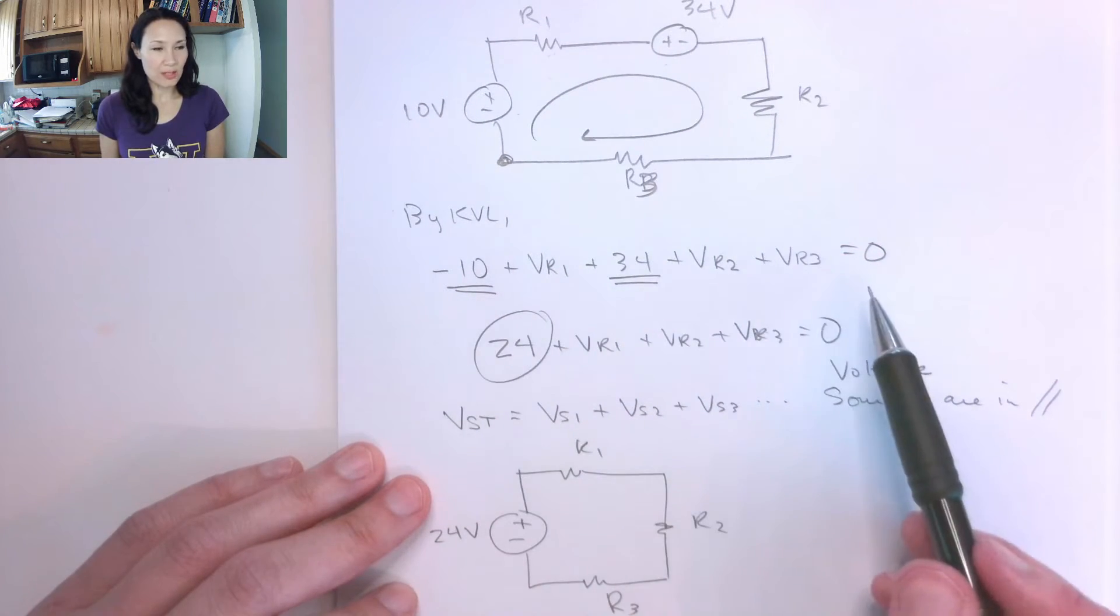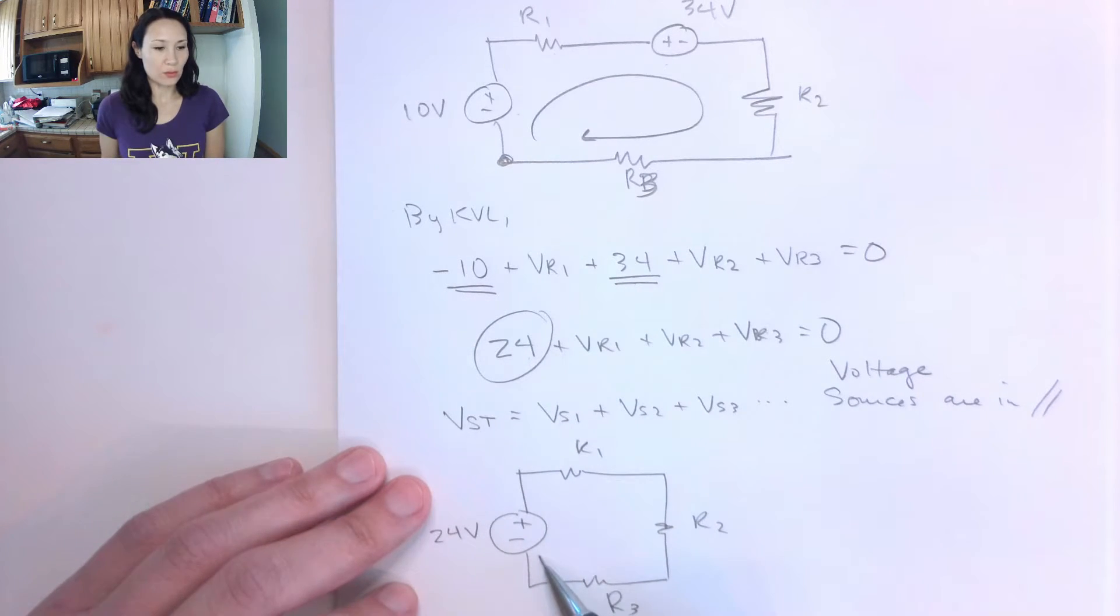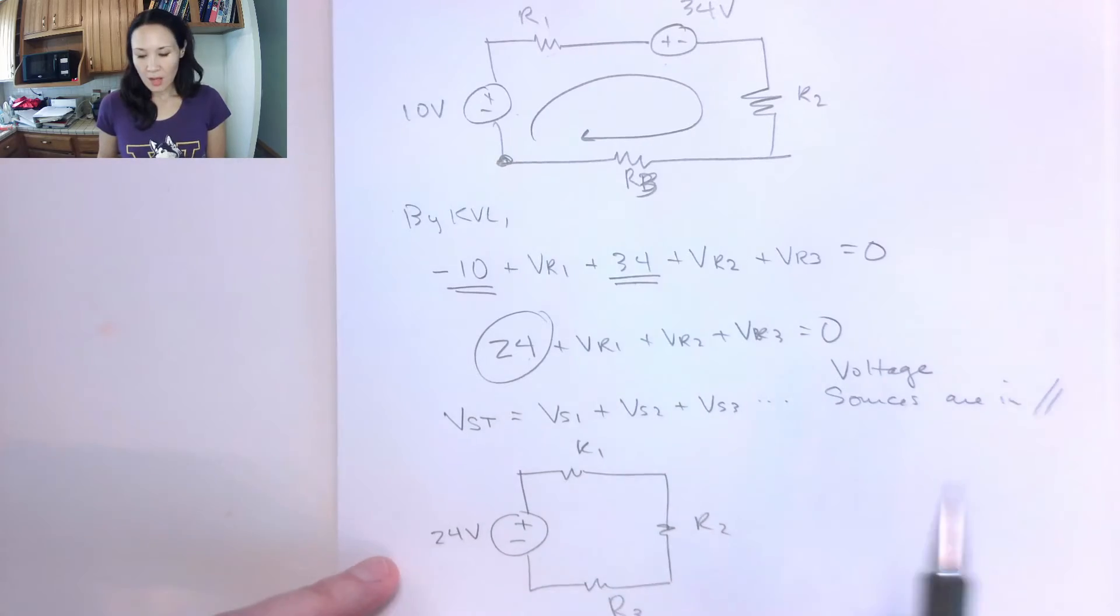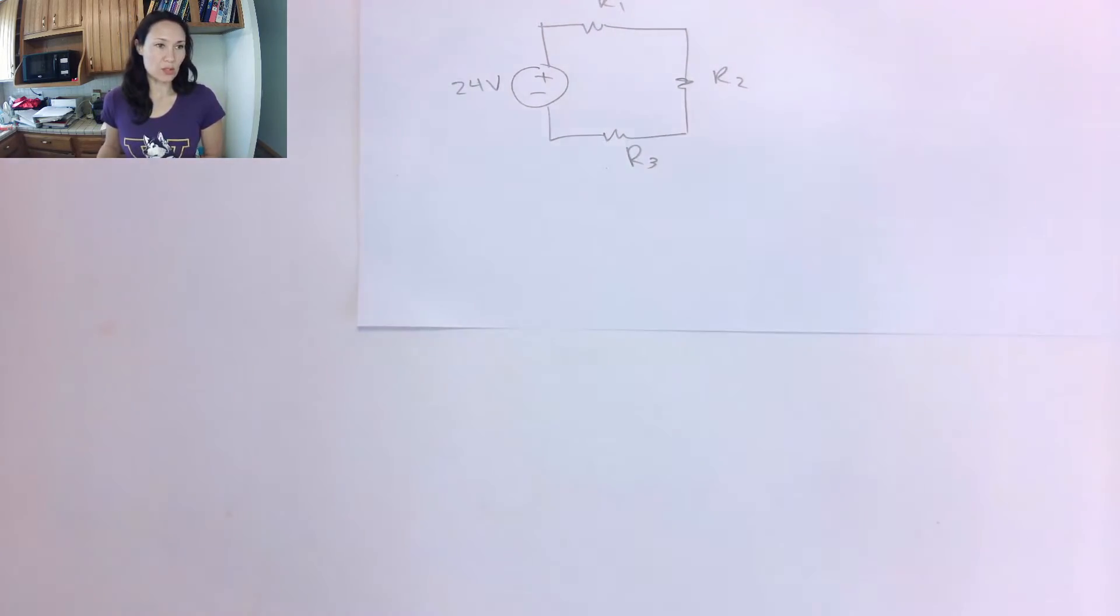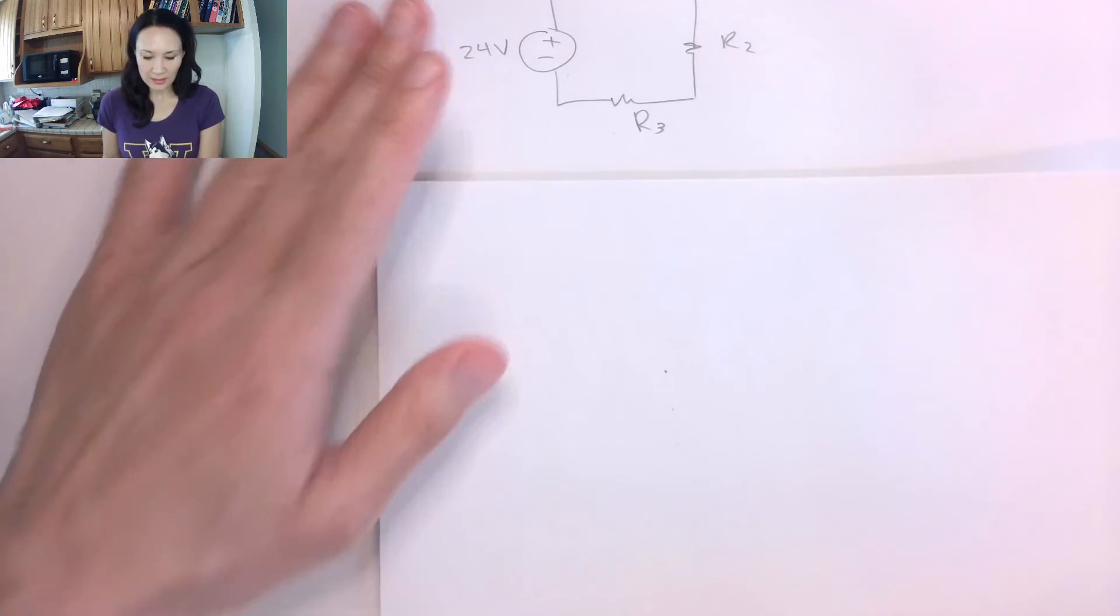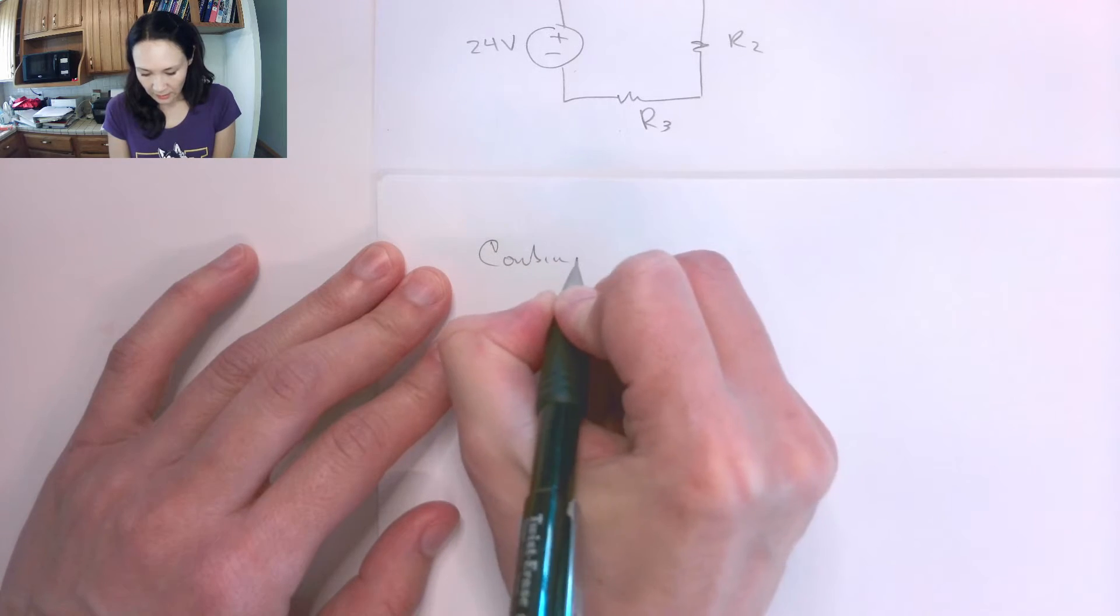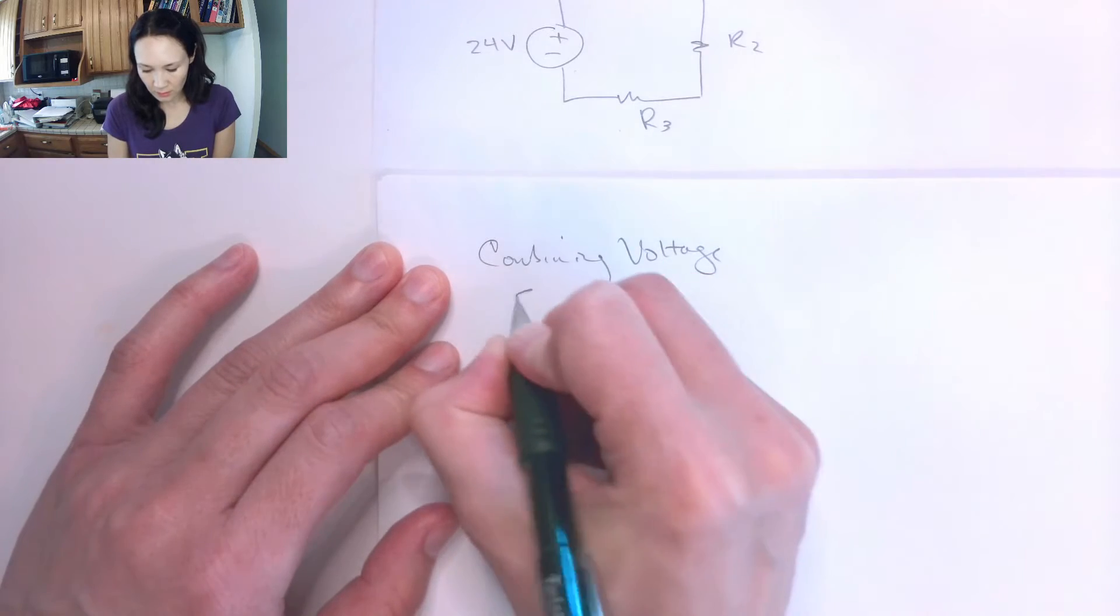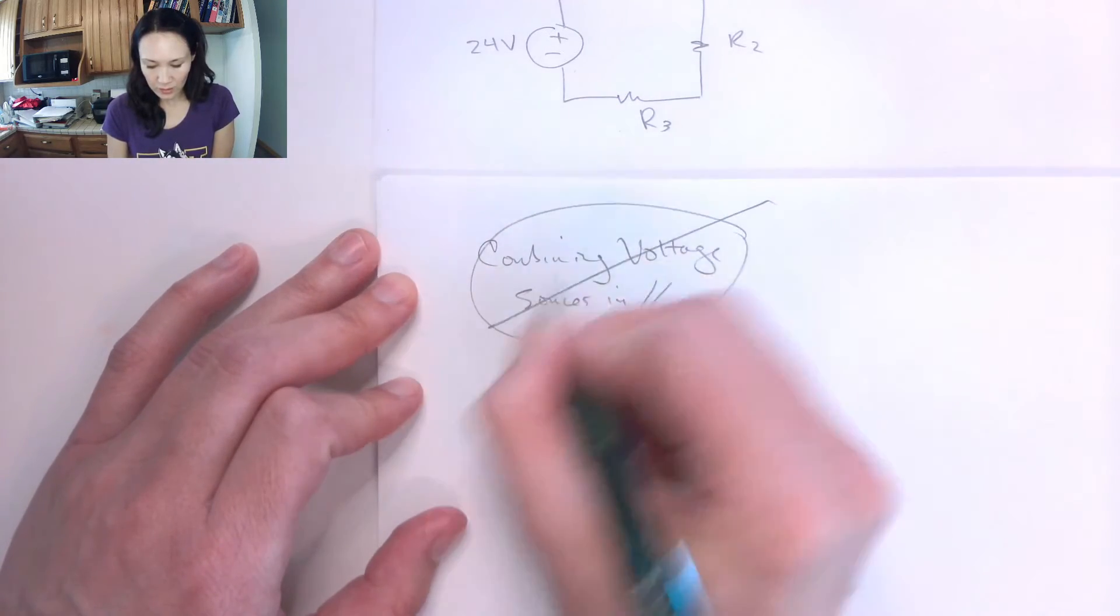And by KVL, we just add them together, and these two are just going to combine into one 24-volt source. So that's how we would combine voltage sources if they're in series. It doesn't actually make sense to combine voltage sources in parallel, so you're not going to see that. I'll say combining voltage sources in parallel, we don't want to do that.